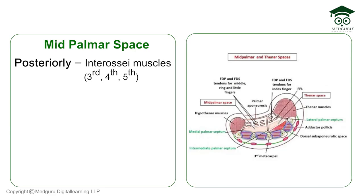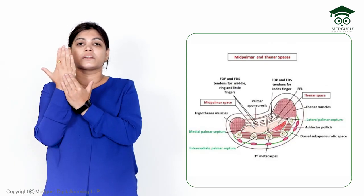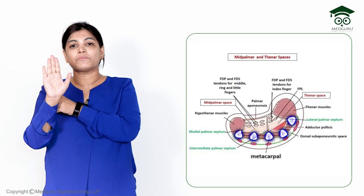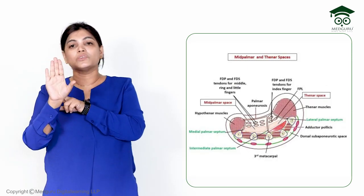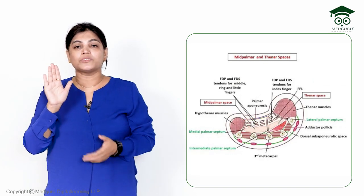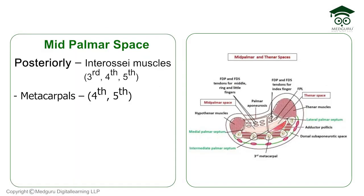Posteriorly, the mid palmar space is bounded by the interossei muscles and the metacarpal bones — specifically the fourth and fifth metacarpals, and the third, fourth, and fifth interossei muscles. In the hand, some muscles are in a superficial plane and some in a deep plane; the interossei muscles lie in the deeper aspect between the metacarpal bones.